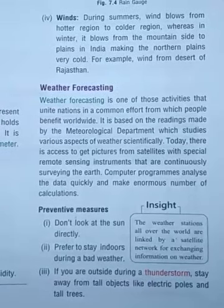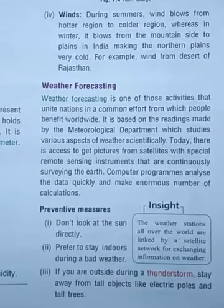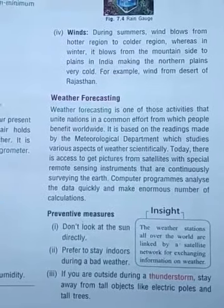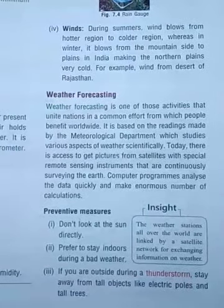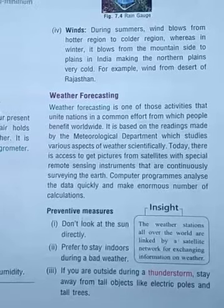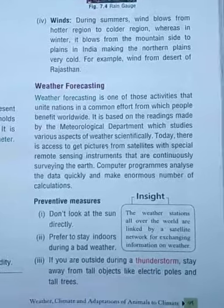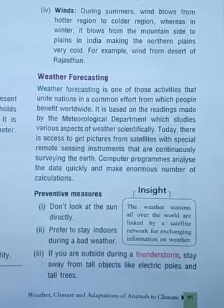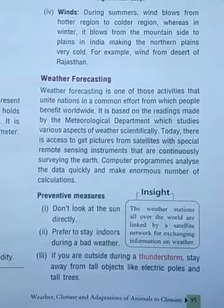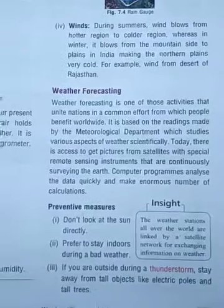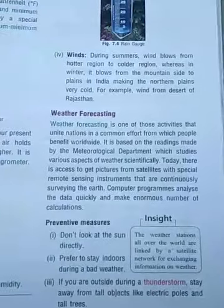Prevention measures: Do not look at the sun directly. Prefer to stay indoors during bad weather. If you are outside during a thunderstorm, stay away from tall objects like electric poles, tall trees, and tall buildings.